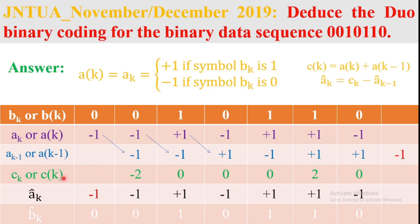Now calculate the output of the Duo binary coder. Using the equation c(k) = a(k) + a(k-1), we add the corresponding values. The results are: -1 + -1 = -2; +1 + -1 = 0; -1 + +1 = 0; +1 + -1 = 0; +1 + +1 = 2; -1 + +1 = 0. So the Duo binary coder output c(k) is: -2, 0, 0, 0, 2, 0.